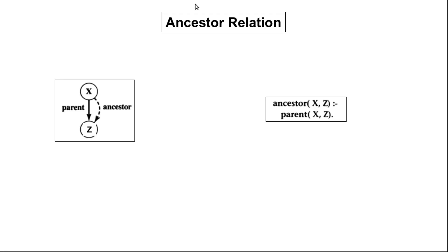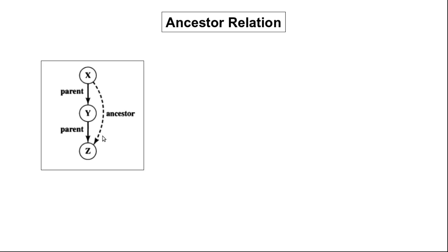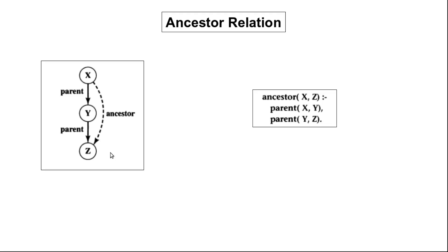However, this is not the only way that x can be an ancestor of z. Another possibility is where x is a grandparent of z. X would be an ancestor of z if there exists a y such that x is the parent of y and y is the parent of z. This definition graph can be represented in Prolog using this rule.